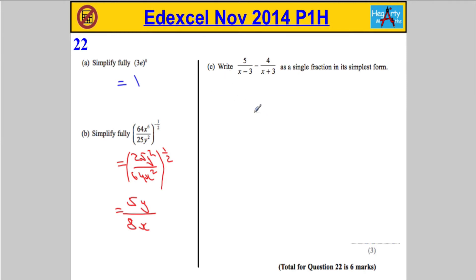Now, very often we go for the lowest common multiple of the denominator. We don't know what x is, so a way of finding a common denominator is to simply multiply the two denominators. So, the common denominator I'm going to say is x minus 3 times x plus 3.